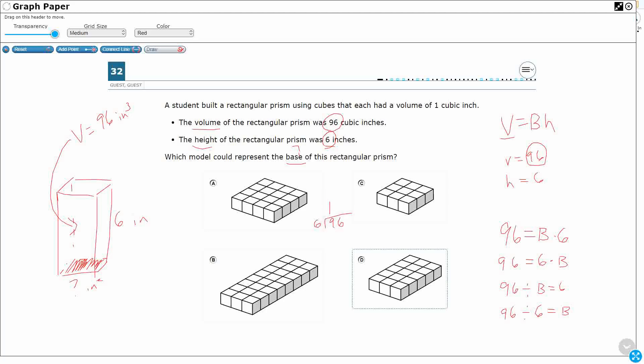6 goes into 9 once. So that's going to be 3. Bring down the 6. 16. So if this is 16 inches squared, then 16 times 6, 96. So my answer is 16. But now I've got to find the right base, okay?